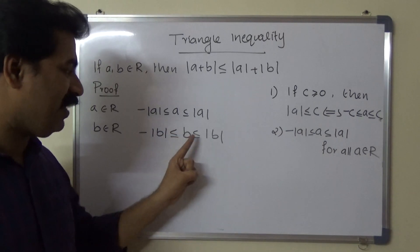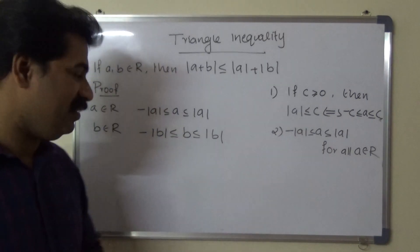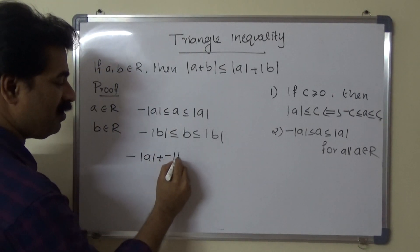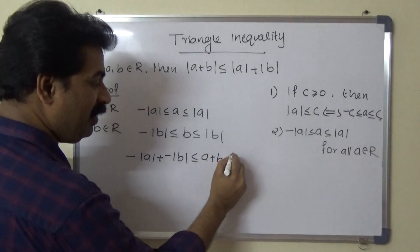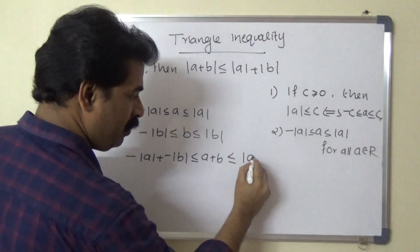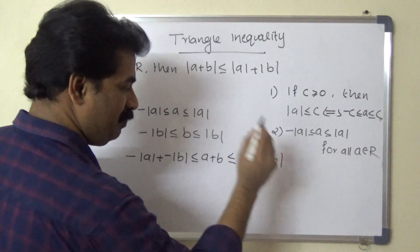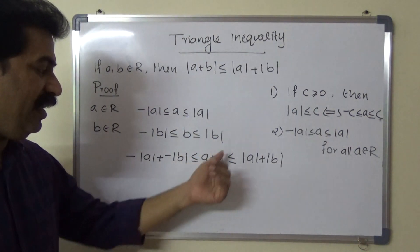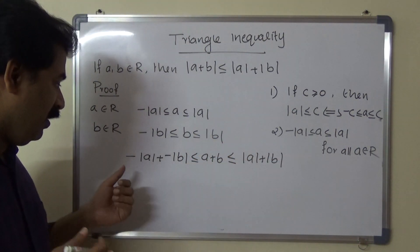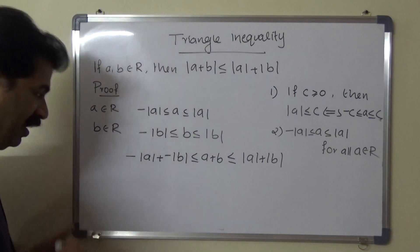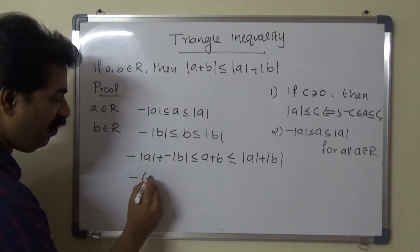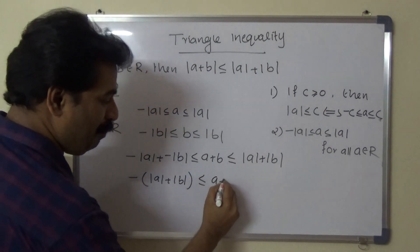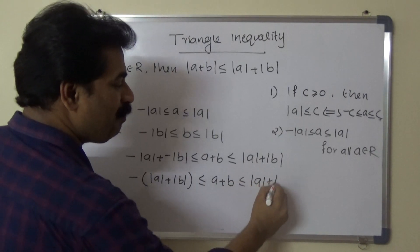Adding these two inequalities, we get: -|a| + (-|b|) ≤ a + b ≤ |a| + |b|. Taking the minus sign outside on the left side, this becomes: -(|a| + |b|) ≤ a + b ≤ |a| + |b|.